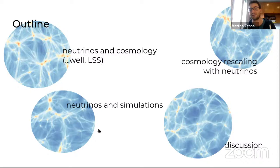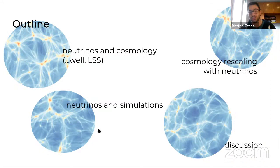My idea for this talk is to first discuss neutrinos and cosmology just a little bit, mostly focusing on large-scale structure and on neutrinos in simulations — what people usually do. Then I'll go and talk about the rescaling algorithm, which allows us to add neutrinos to a simulation that didn't have them in the first place. Then I'll discuss what we can do with this and what we have done in the last year, including more recent works and ongoing projects.